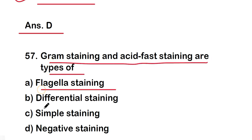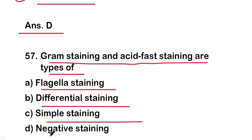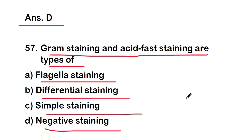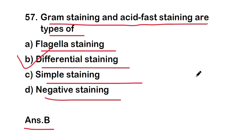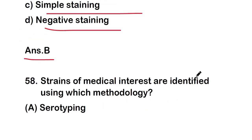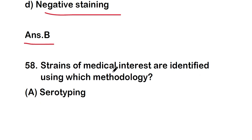Next question: Gram staining and acid-fast staining are types of — flagella staining, differential staining, simple staining, or negative staining? The right answer is option B — differential staining. Gram staining and acid-fast staining are types of differential staining.